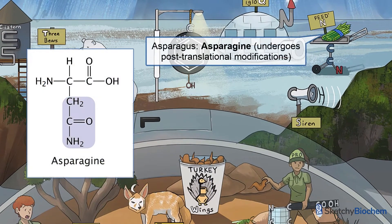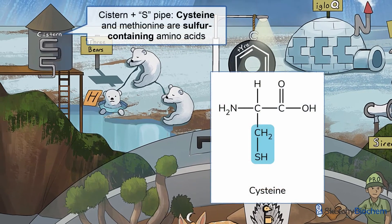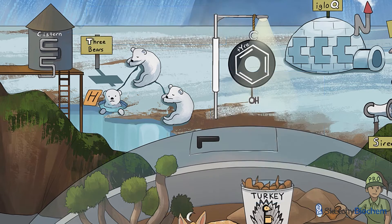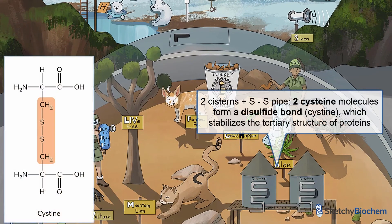Those asparagus plants are asparagine. Asparagine also undergoes post-translational modification, specifically the addition of N-oligosaccharides in the endoplasmic reticulum, also necessary for cell trafficking and signaling. Just like methionine, cysteine also contains a sulfur atom in its side chain. Cysteine can form disulfide bonds with other cysteine molecules — this forms cystine. These cisterns have their very own pipes connected over a bridge-looking platform, a perfect depiction of a disulfide bridge. Disulfide bridges play a vital role in stabilizing tertiary protein structures.